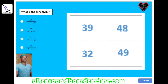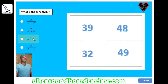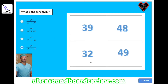What is the sensitivity? A: 39 divided by 39 plus 39, B: 39 divided by 39 plus 48, C: 49 divided by 49 plus 48, or D: 39 divided by 39 plus 32? The answer is D, 39 divided by 39 plus 32, or A divided by A plus C.